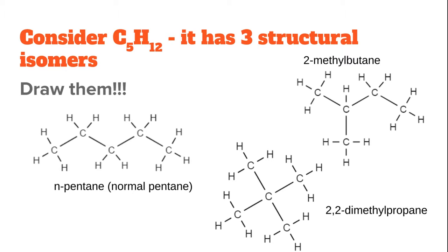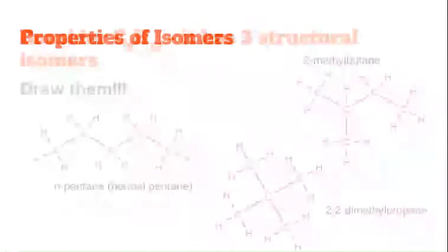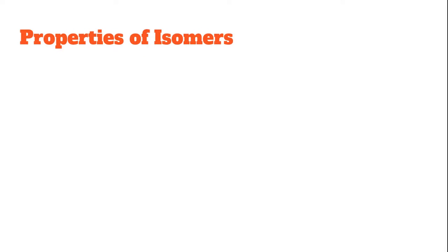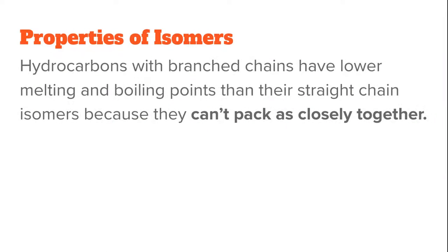So what do these physical properties have to do with each other for all of these different isomers? The properties of isomers do change. Hydrocarbons with branched chains have lower melting and boiling points than their straight chain isomers because they can't pack as closely together. You can see in the slide here...